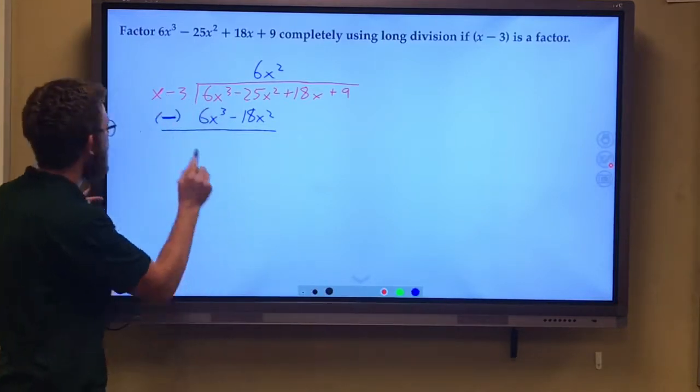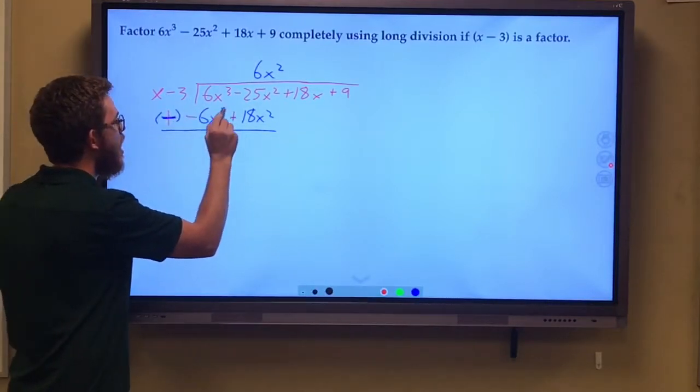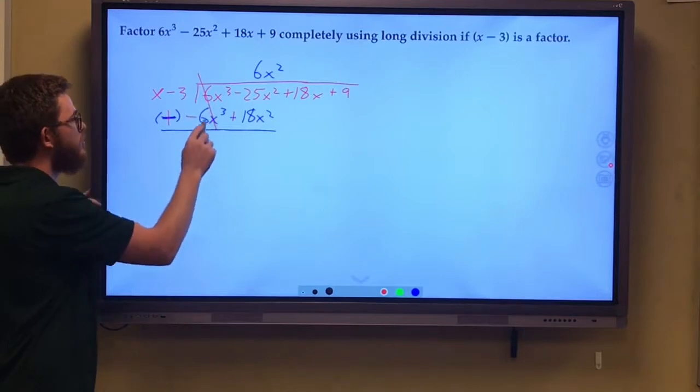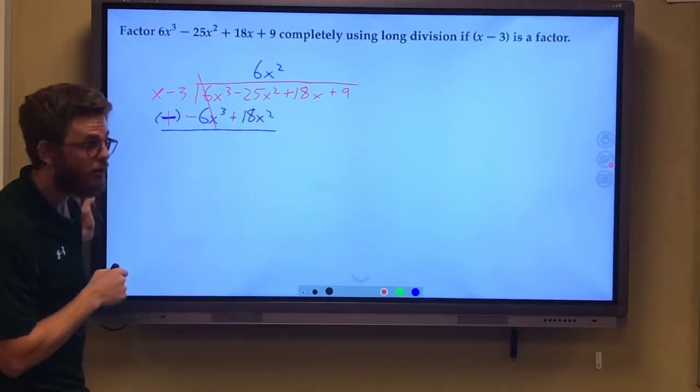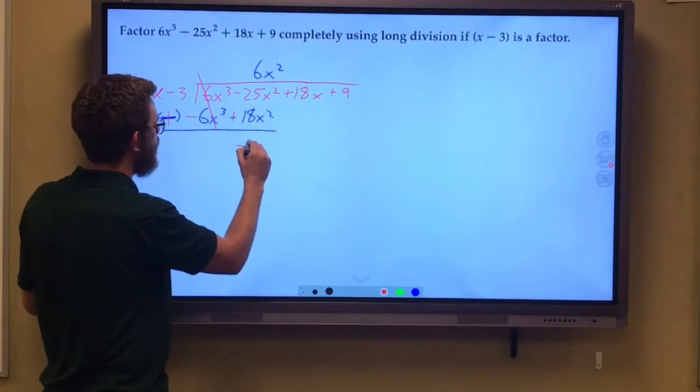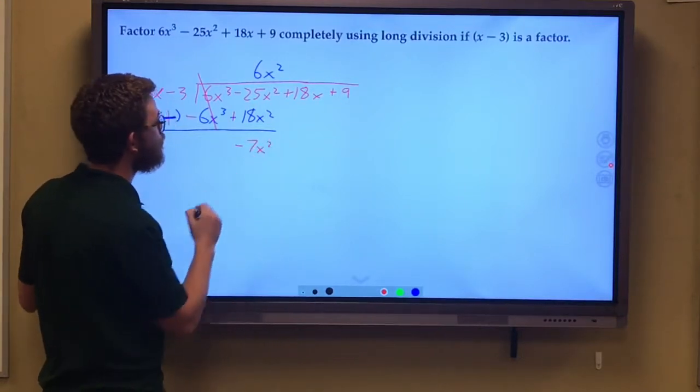Another way to subtract is to add the opposite. These, of course, cancel out. Negative 25x squared plus 18x squared is a negative 7x squared.